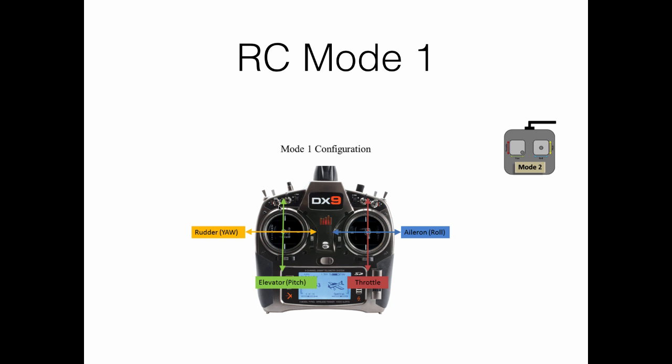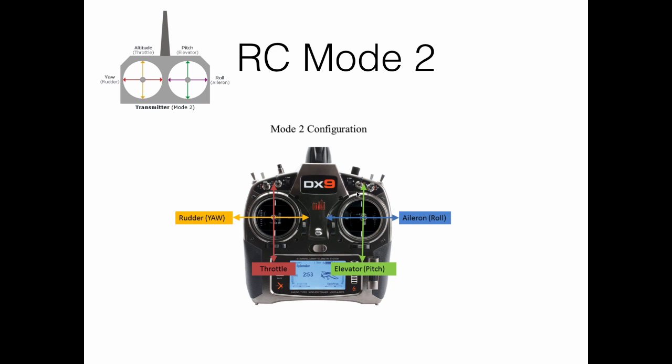On the other hand, mode two is configured differently. In mode two, the right stick is assigned to control the aileron, that is the roll, like mode number one, but it controls the elevator, that is the pitch, when it is moved up and down.